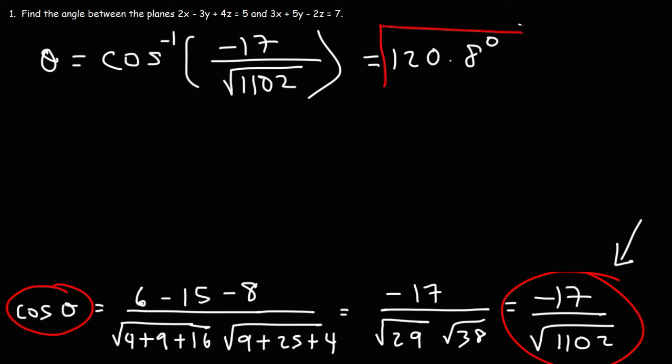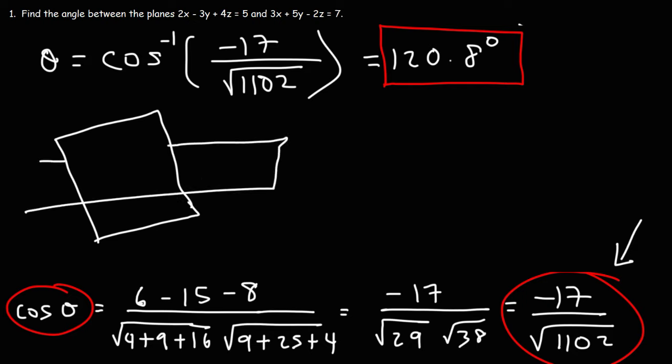So this is one of the two answers. So let me explain. Let's say this is one of the planes. And let's say here we have another plane. So this angle here, that's the larger angle. That's 120.8. We also have a smaller angle. Which is going to be 180 minus 120.8. And that angle is going to be 59.2.